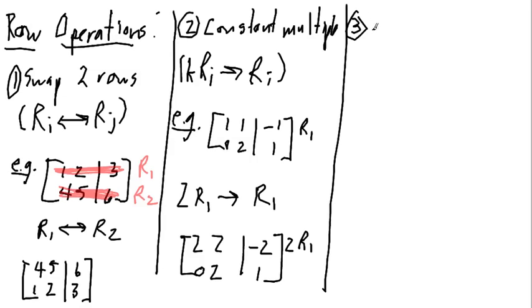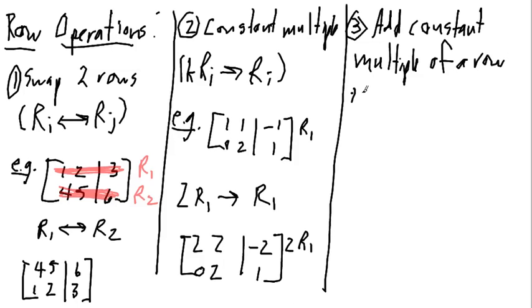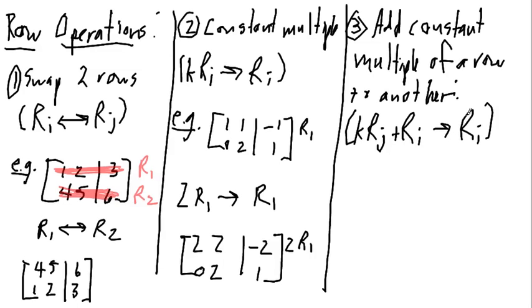And the last is adding a constant multiple of a row to another row, a different row. And we denote this by K, R, J, plus R, I replaces R, I. So, I'm replacing the Ith row with the Ith row plus K times the Jth row.